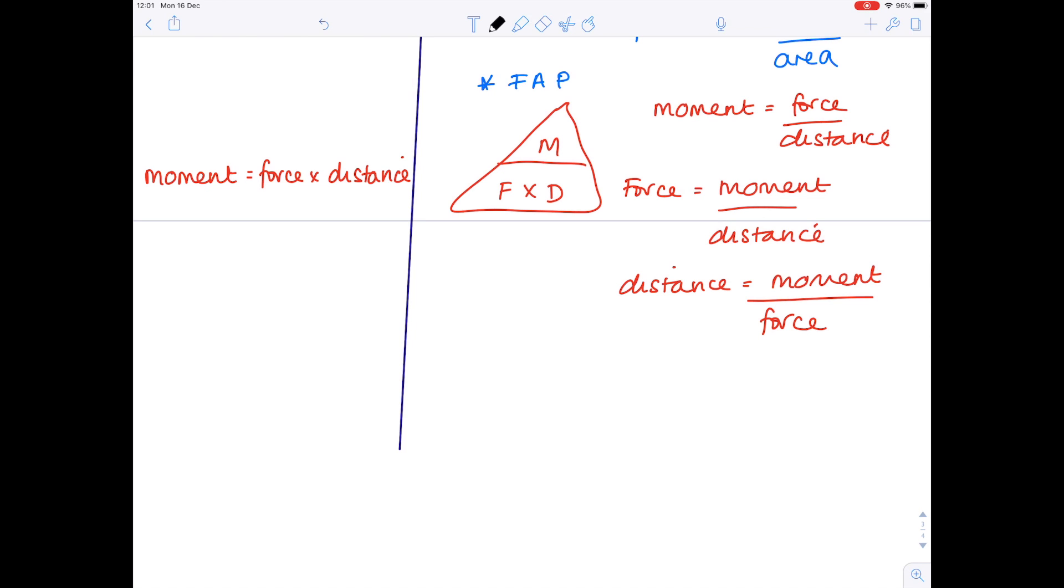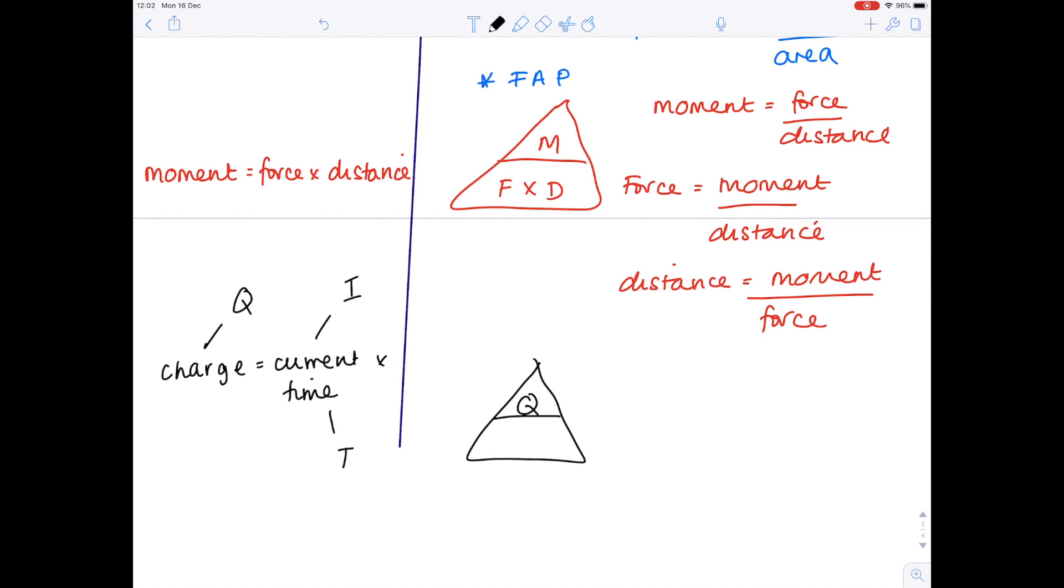Let's do some electricity equations now. So we'll start with charge equals current times time. Remember that charge is represented by Q. Current is represented by I. Time is obviously T. So when I do my triangle, I do Q equals I times T. I equals Q divided by T. T equals Q divided by I. And I use the word quit to help me remember that.